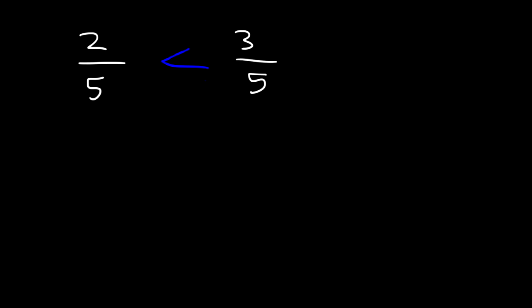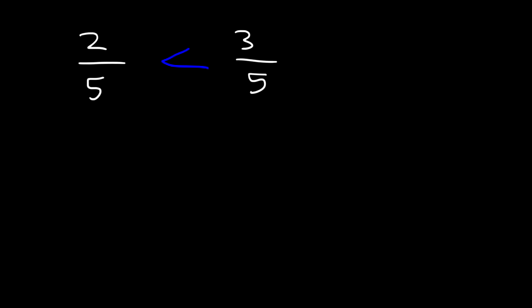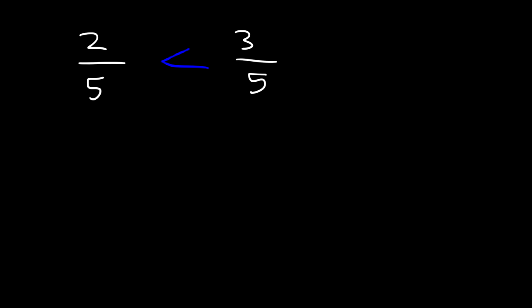Keep in mind: wherever the sign opens towards, that's the side that's greater. You can read this two ways: 2 over 5 is less than 3 over 5, or if you read it from right to left, 3 over 5 is greater than 2 over 5. But this is the inequality that we need.